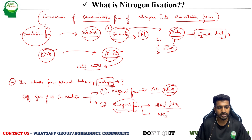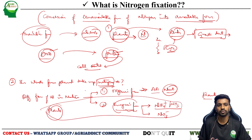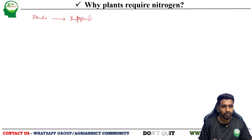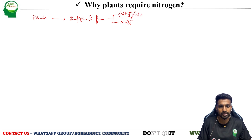Out of these two broadly classified forms of nitrogen availability, plants absorb nitrogen in the inorganic form. Out of the various inorganic forms, plants absorb most nitrogen in the form of nitrate. The rest — a few percent — is absorbed in the form of ammonia or the ammonium ion. This is what you have to remember.